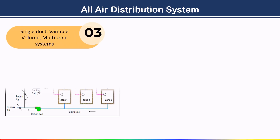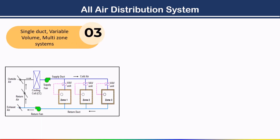The next system is the single duct variable volume multi-zone system. Here, a single duct is used to supply conditioned air to each and every zone. For return air and supply conditioned air, a single duct is also used — that is why this system is called a single duct system.